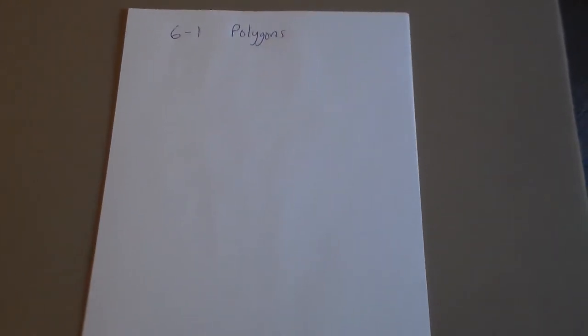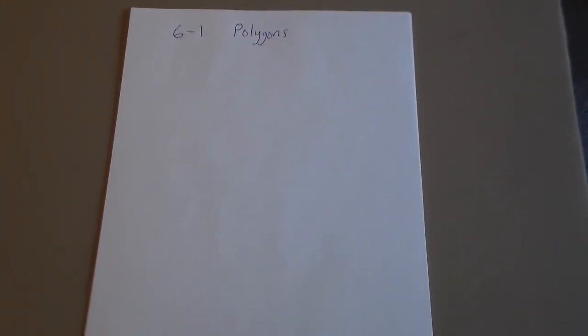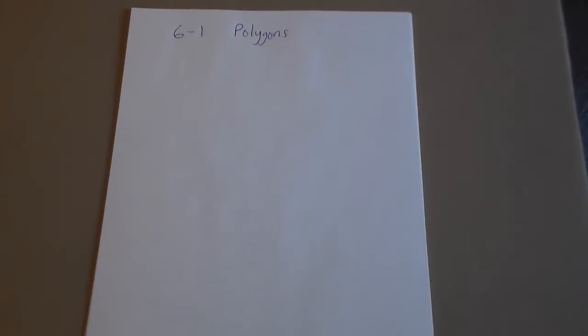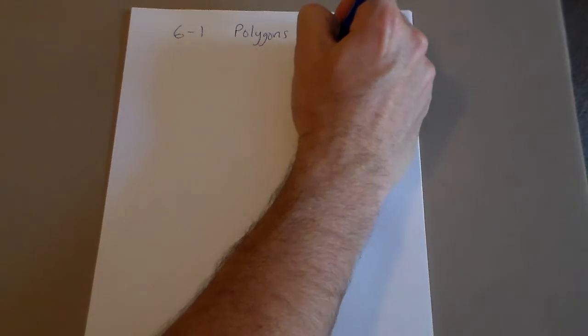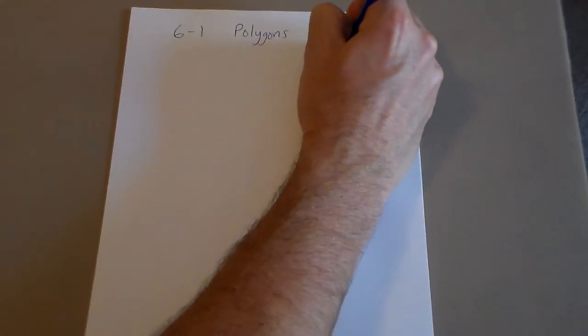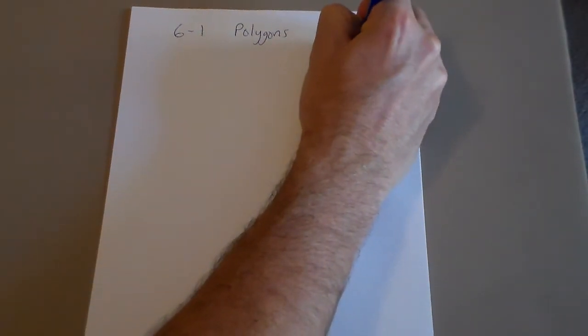All right, chapter six — one of my favorite chapters in the book, probably my favorite chapter — and chapter six talks all about quadrilaterals.